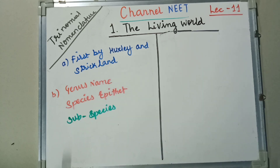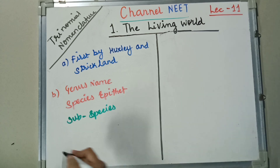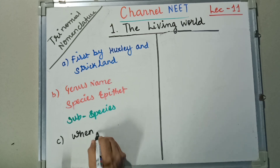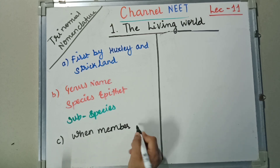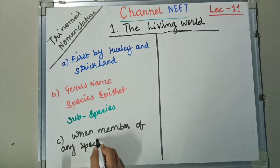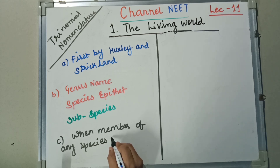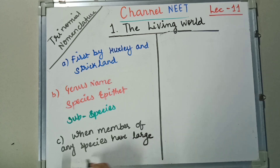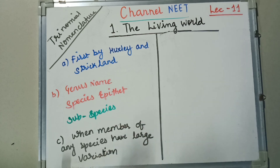We will see some examples of where this is going to be used. First, when members of any species have large variations, we take up this Trinomial Nomenclature.